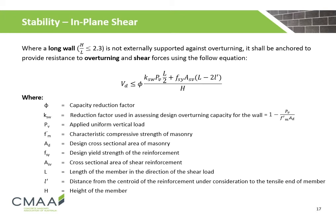If a long reinforced masonry wall is not externally supported against overturning, it shall be anchored to provide resistance against overturning and shear forces using the following equation, where phi is the capacity reduction factor; Ksw is the reduction factor used in assessing design overturning capacity for the wall; Pv is the applied uniform vertical load; F'm is the characteristic compressive strength of the masonry; Ad is the design cross-sectional area of the masonry; Fsy is the design yield strength of the reinforcement; Asv is the cross-sectional area of the shear reinforcement; L is the length of the member in the direction of the shear load; L' is the distance from the centroid of the reinforcement under consideration to the tensile end of the member; and H is the height of the member.